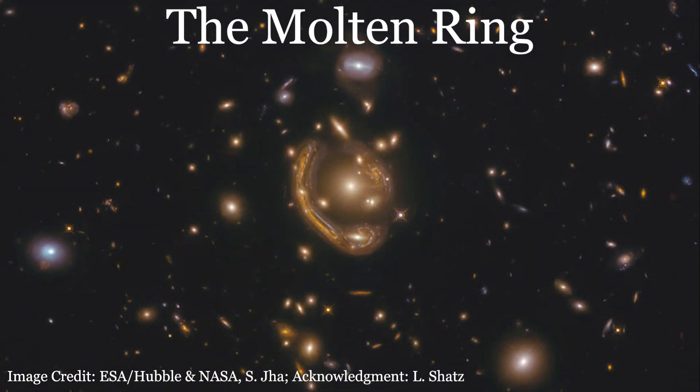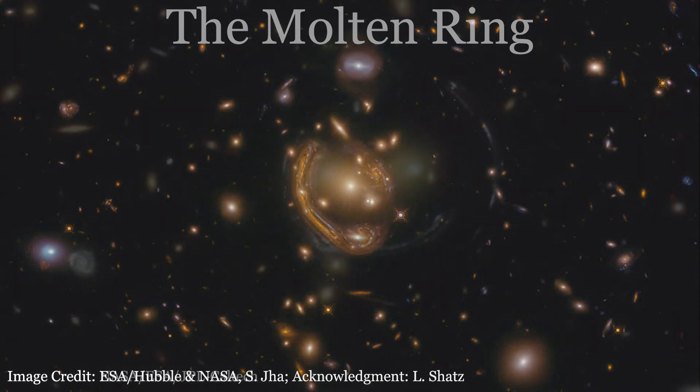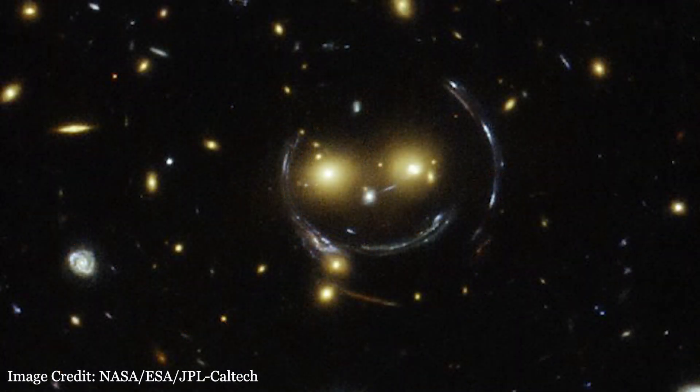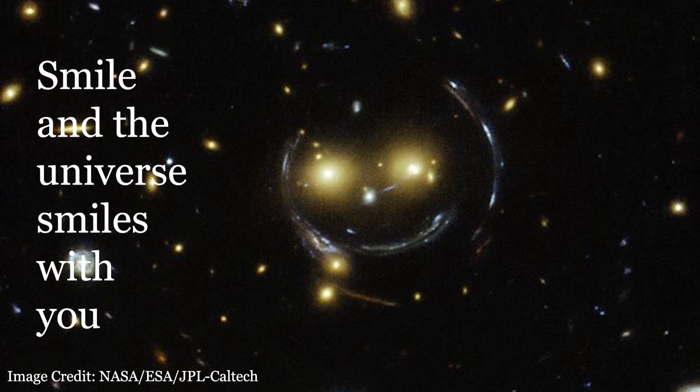This object is nicknamed the molten ring. Note that a true Einstein ring would require perfect source-lens-observer alignment, which isn't very likely, but this image comes pretty close. And this final gravitational lensing image is often accompanied by the adage: Smile, and the universe smiles with you.